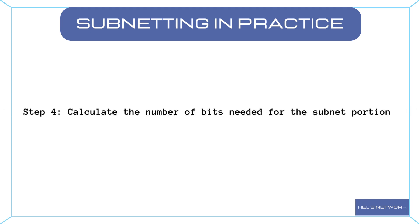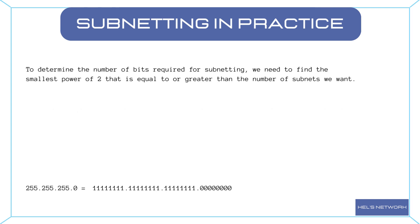Step 4: Calculate the subnet bits. We want to create four subnets. To determine the number of bits required for subnetting, we need to find the smallest power of two that is equal to or greater than the number of subnets we want. Since 2^2 equals 4, we need two bits to represent four subnets. These two bits are taken from the host portion of the IP address to create the subnets, and the remaining bits are used for host addresses within each subnet. By allocating two bits for subnetting, we've effectively divided our original network into four smaller subnets, each with its own set of host addresses.